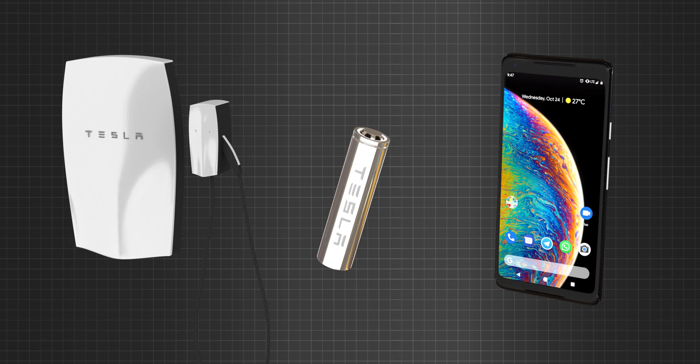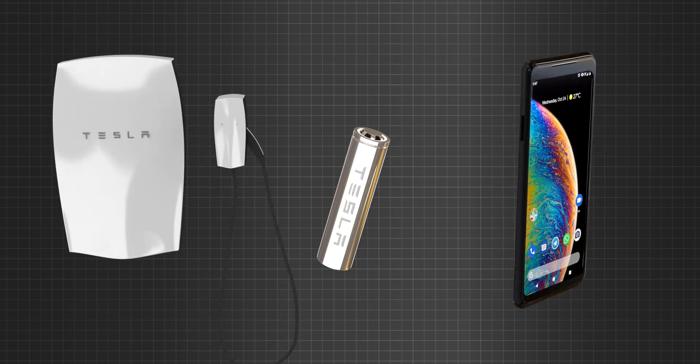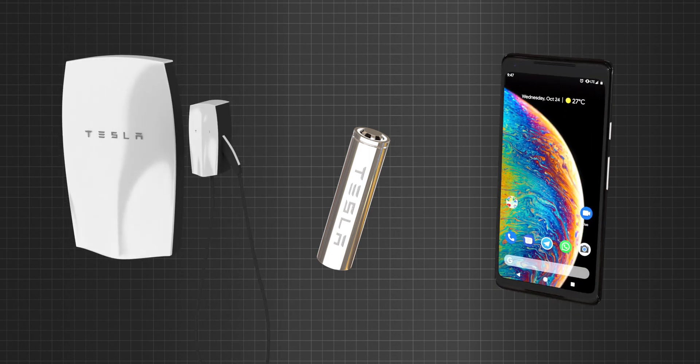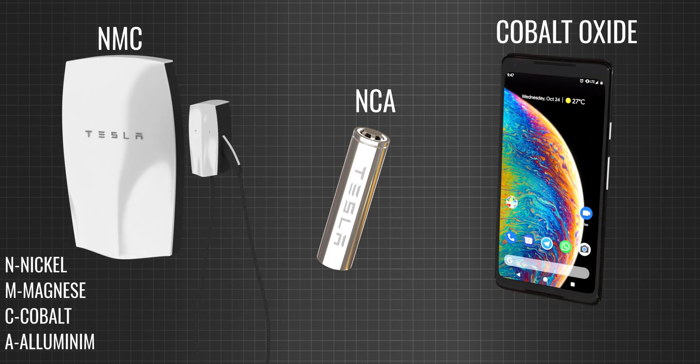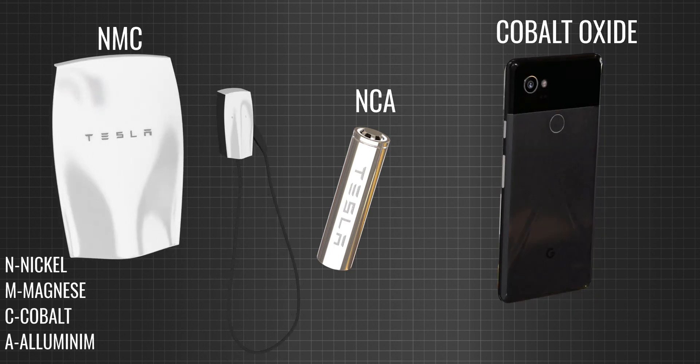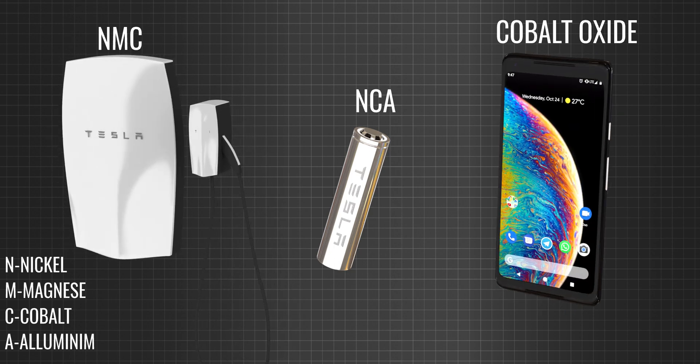Today, almost all valuable electronic gadgets are using lithium ion batteries, but it is interesting to note that there are slight changes in the chemical composition of the metal oxides used. This is because factors like cost, life cycles, and energy density vary depending upon the type of application.